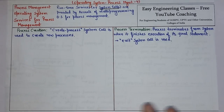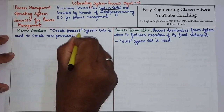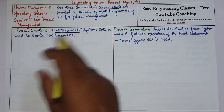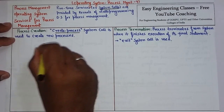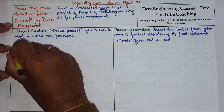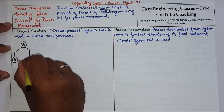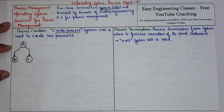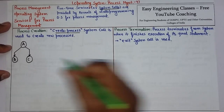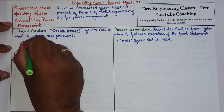Let's start with process creation. Process creation is used to create a process. The system call that is used to create a process is 'create process'. This is a system call which is used to create a new process. Suppose a process A creates one more process B and one process C. So process A creates two more processes B and C. The process which creates more processes is called the parent process, so here A is the parent process.